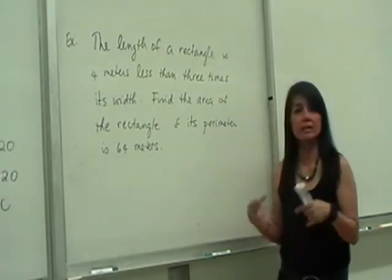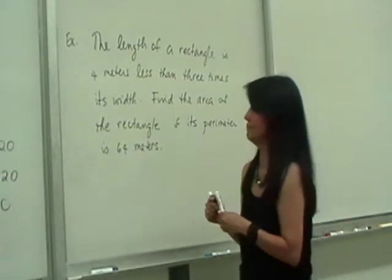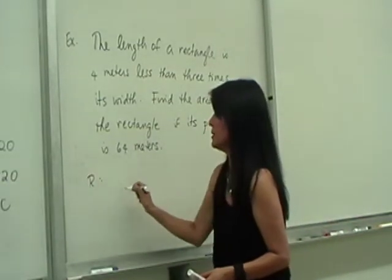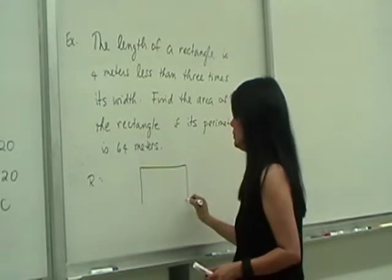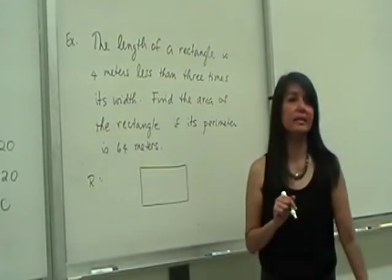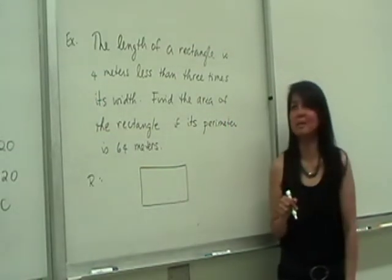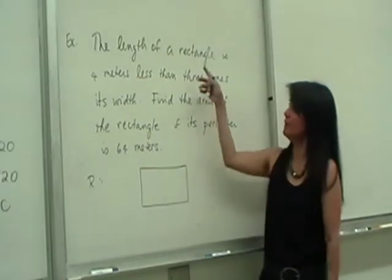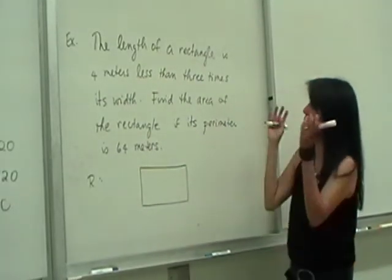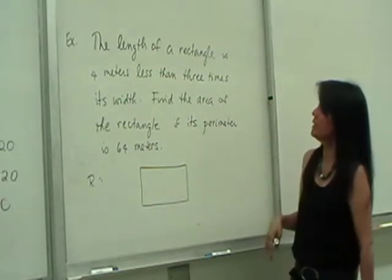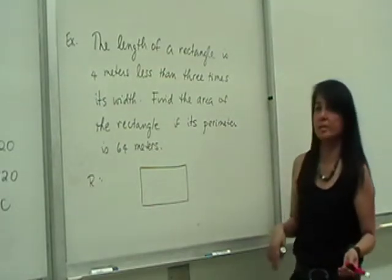The length of a rectangle. And you see the word rectangle right away, so probably you'll say you drew a picture, right? Yes. I was bad. I didn't even read the problem. So I know right away it's going to be a geometry problem involving the rectangle. So let's read. The length of a rectangle is four meters less than three times its width.